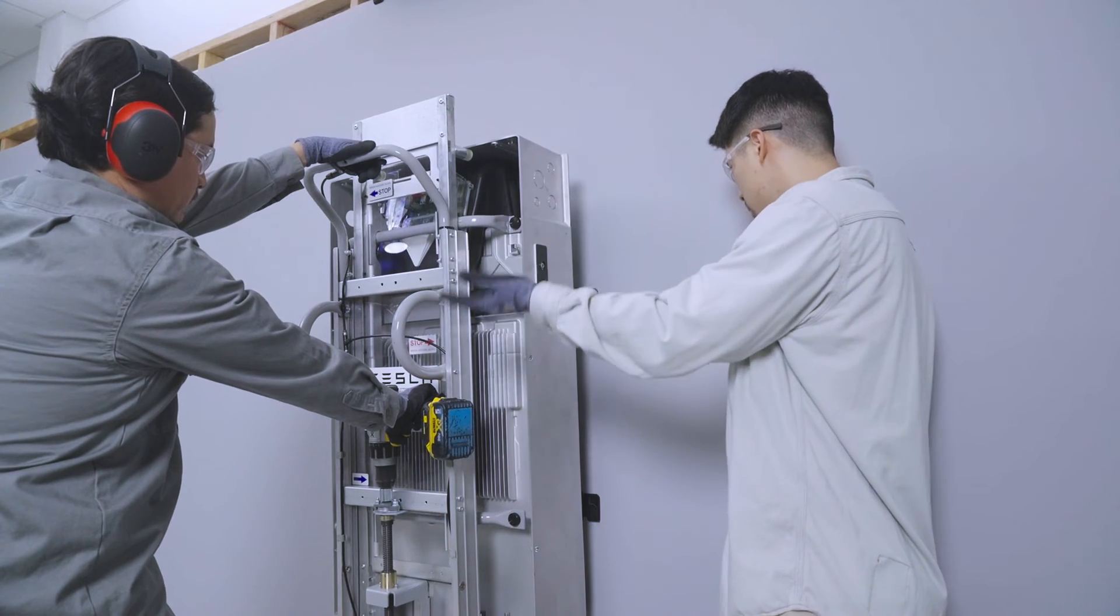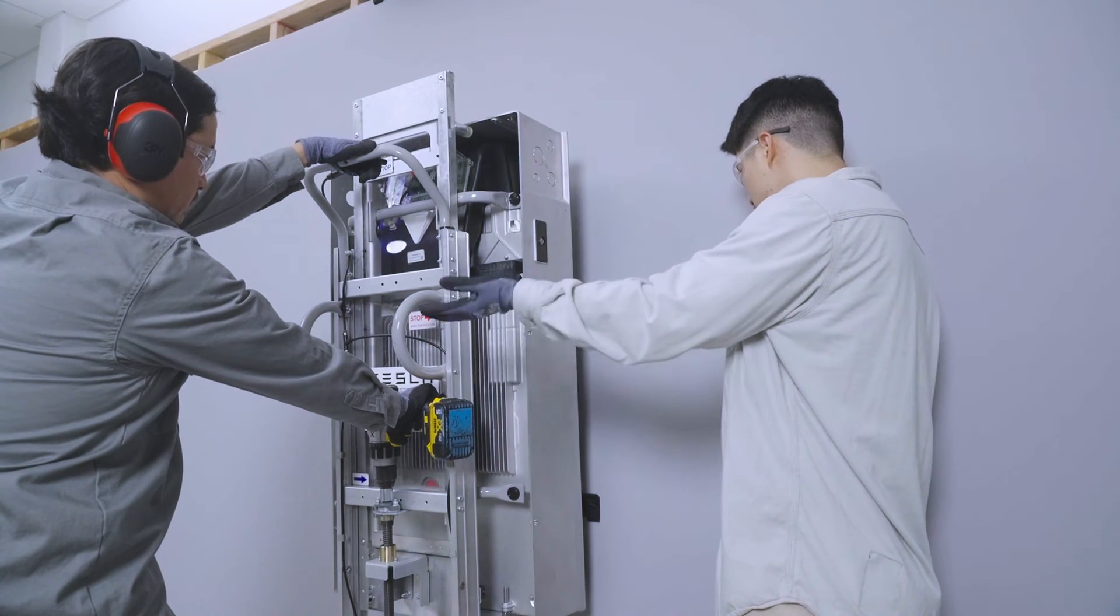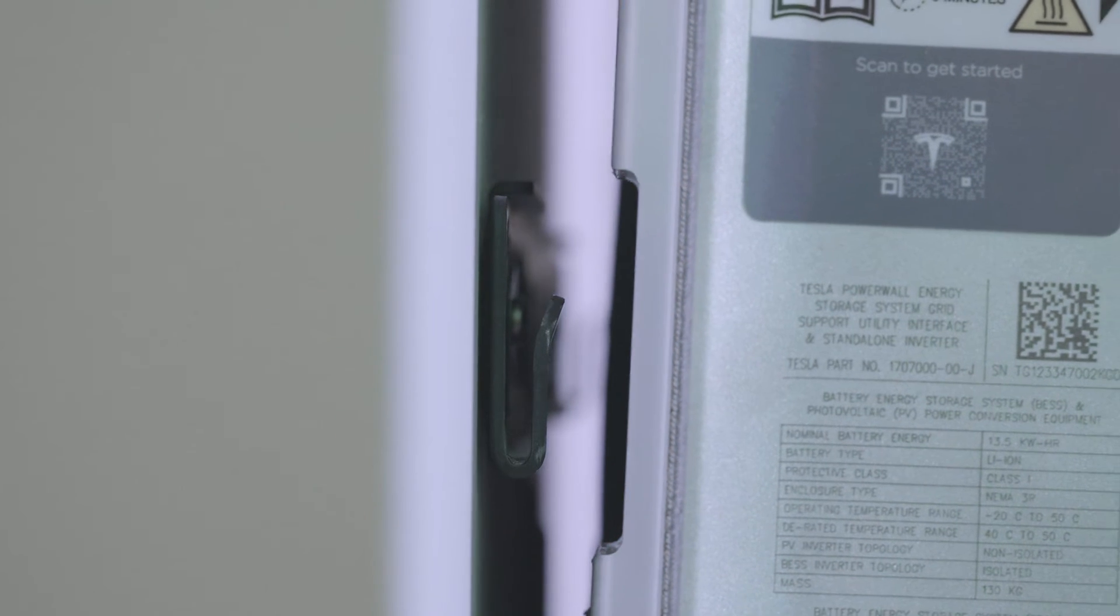Use a partner to verify alignment of Powerwall 3 and the mounting bracket. When the cleat is just above the mounting bracket, tilt the Dolly toward the wall.